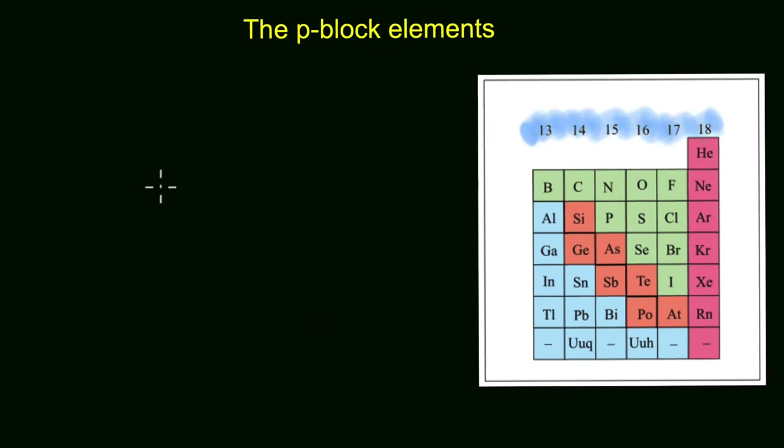Let's understand this in a bit more detail. Take the first element of the p-block, which is boron. Boron has five electrons, so its electronic configuration would be 1s² 2s² and 2p¹. As you can see, you have one electron in the p orbital.